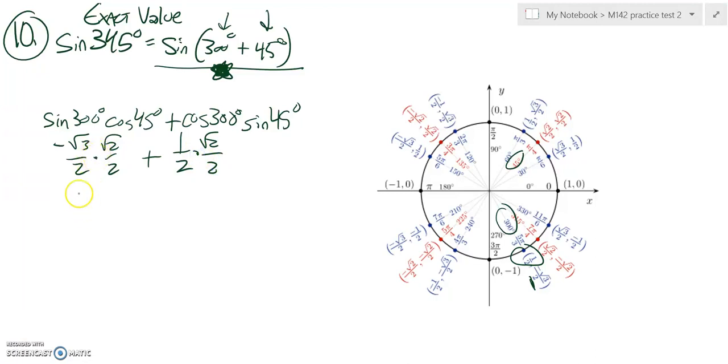So now I'm going to do a little bit of multiplication. Negative root 3 times negative root 2 is negative root 6. 2 times 2 is 4. 1 times root 2 is root 2. That's also over 4. They have a common denominator, so I can add them together. Negative square root of 6 plus 2, that whole thing is over 4.